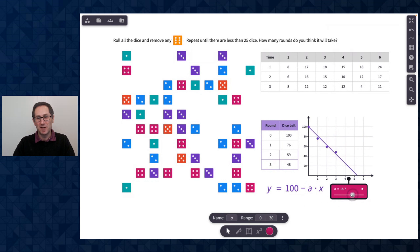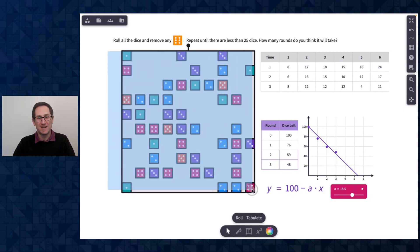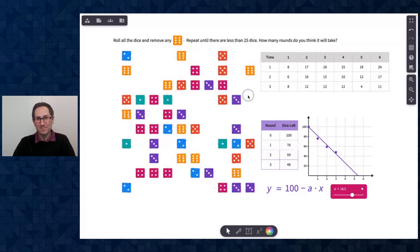And now when I move this slider, the graph is changing. So maybe it's something like that. 18.5 might be on average. I'm removing 18 and a half sixes every time. Let me roll.